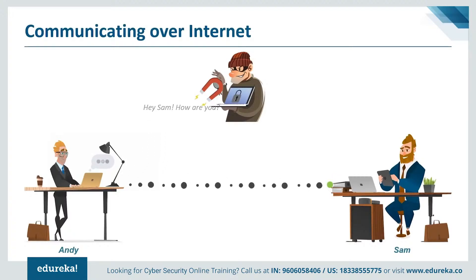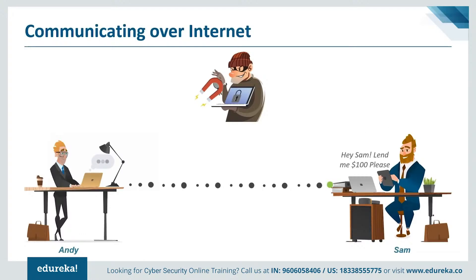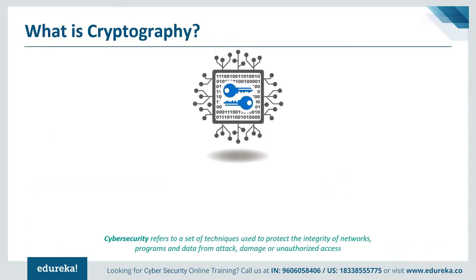Let's say there is a smart guy called Eve who has secretly got access to your communication channel. Since this guy has access to your communication, he can do much more than just eavesdrop. For example, he can try to change the message itself. What if Eve actually gets access to your private information? That could result in a big catastrophe. So how can Andy be sure that nobody in the middle could access the message sent to Sam? That's where cryptography comes in.